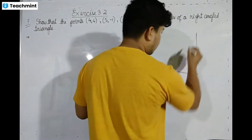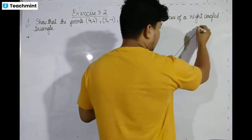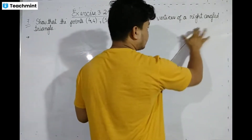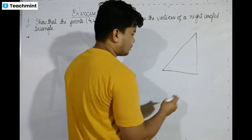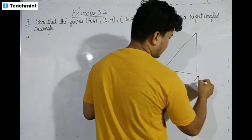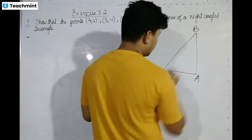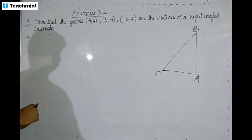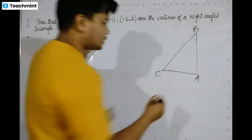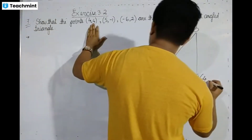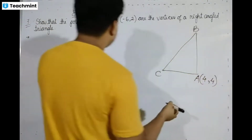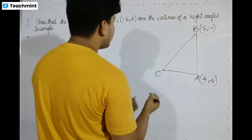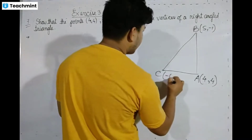Let me label the points A, B, and C. The A coordinates: check — A is (4, 4). The B coordinates: (5, minus 1). The C coordinates: (minus 6, 2).